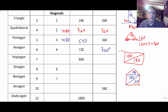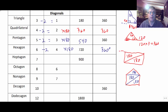You may also notice that the number of triangles is always two fewer than the number of sides. So 3 minus 2 is 1, 4 minus 2 is 2, 5 minus 2 is 3, 6 minus 2 is 4. So in a hexagon, multiplying four triangles by 180, I get 720 degrees.